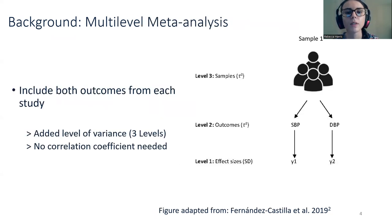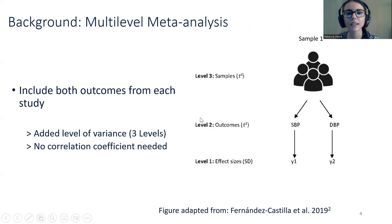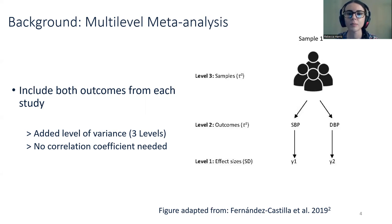An appropriate approach to combine multiple dependent outcomes in a meta-analysis is through multilevel modeling, which accounts for the dependence between outcomes by specifying in the statistical model how each effect size is nested in the included study. As shown in the illustration, if a study reports both systolic and diastolic blood pressure, we can add another level of variance at level two. This is an extension of a random effects two-level model with an additional tau-squared variance component for the multiple outcomes, giving us three levels of variance. Importantly, the correlation coefficient between systolic and diastolic blood pressure is not required, which is advantageous because correlations are often not reported in the original studies.